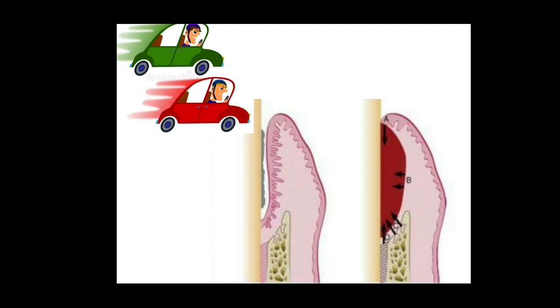C are the alveolar bone cells and D cells from periodontal ligament. We can imagine a car race, so whoever wins the race repopulates the area and determines the fate of healing.